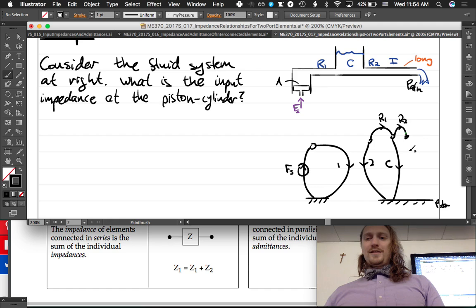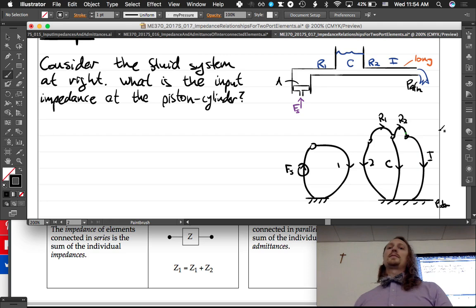Oh, I ends at atmosphere. So we could also have an R3 if we wanted to, to ground as well, and we could set it to zero if we felt like it—no resistance, just blows right through.